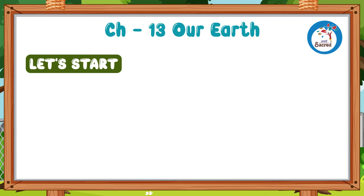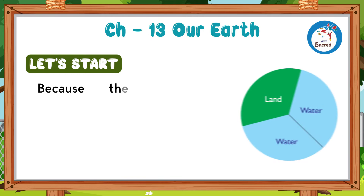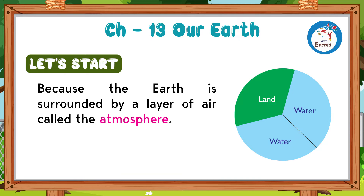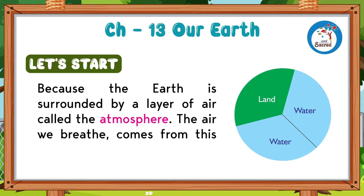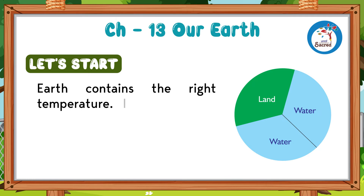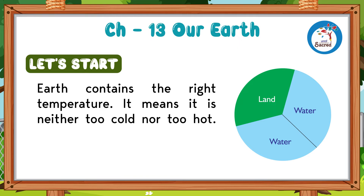Why? Because the Earth is surrounded by a layer of air called the atmosphere. The air we breathe comes from the atmosphere. Earth contains the right temperature — it is neither too cold nor too hot.